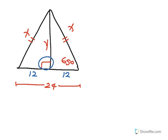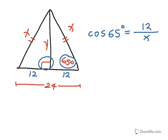I can solve for X or Y. X is the hypotenuse of this right triangle, and with respect to the 65 degree angle, 12 is the adjacent side. So I can use the cosine ratio: the cosine of 65 degrees should equal the ratio of the adjacent side 12 over X. Multiplying both sides by X, X times the cosine of 65 degrees should equal 12.